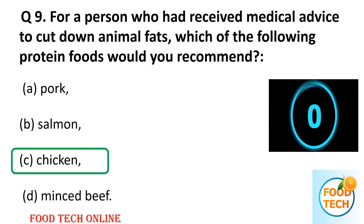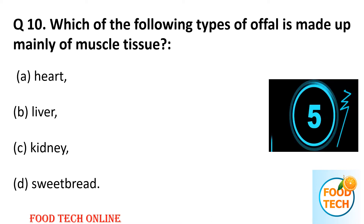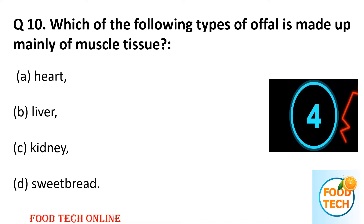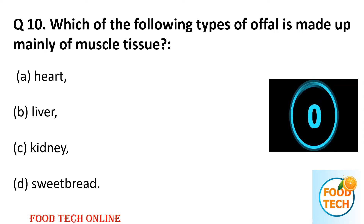Question 10: Which of the following types of offal is made mainly of muscle tissue? A: heart, B: liver, C: kidney, D: sweetbread. Answer: A, heart.